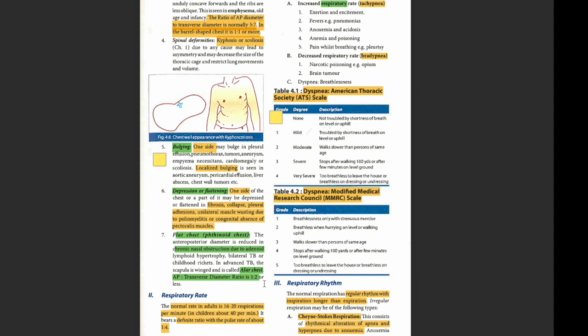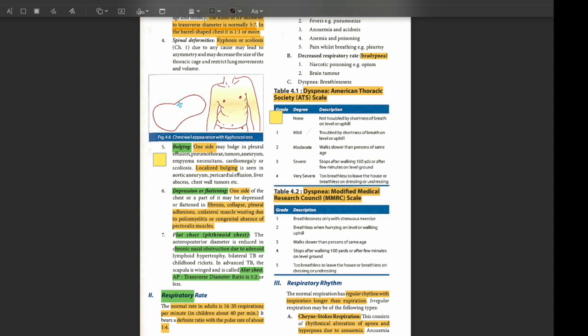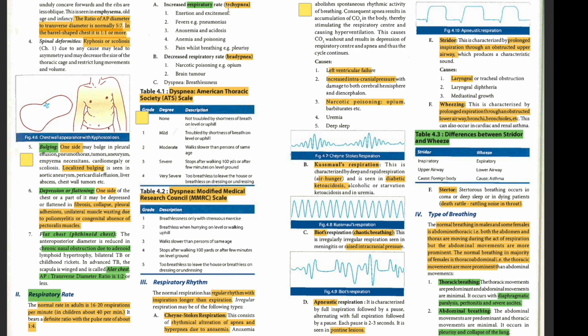Respiratory rate: the normal rate in adults is 16 to 20 respirations per minute; in children, it is around 40 per minute. This is very, very important. When we talk about respiratory rate, we determine whether the patient is tachypneic or bradypneic. Tachypnea is increased rate; bradypnea is decreased. Remember the causes — very important.